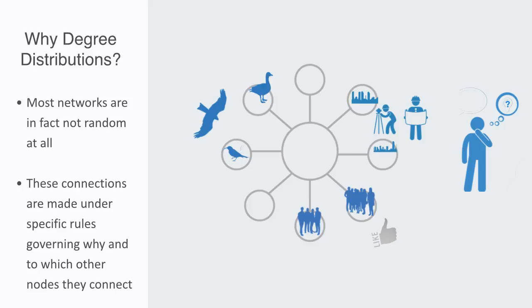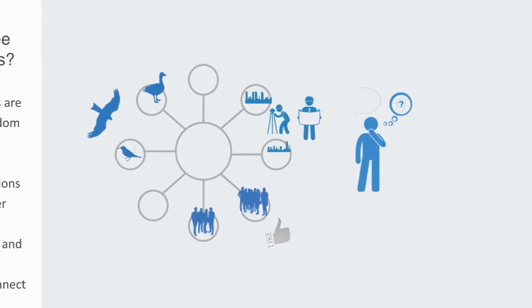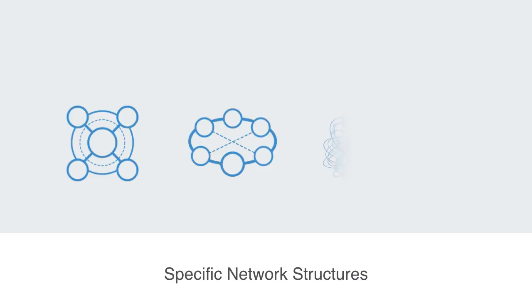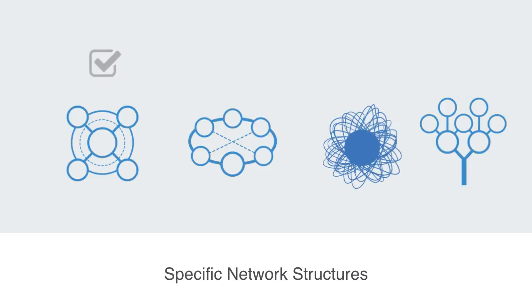It is out of the aggregate behavior of these nodes interacting that we get networks which have specific and widely encountered properties — meaning we don't just live in a world of random networks, but in fact a world of networks that have a specific structure, that has emerged out of these local rules.